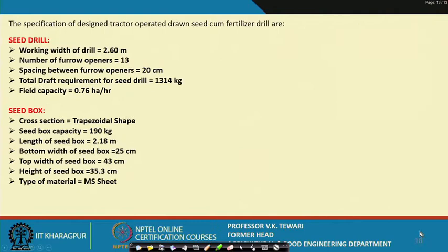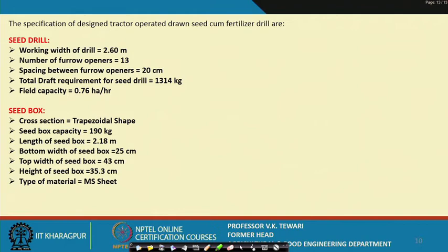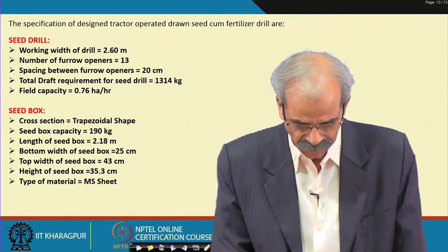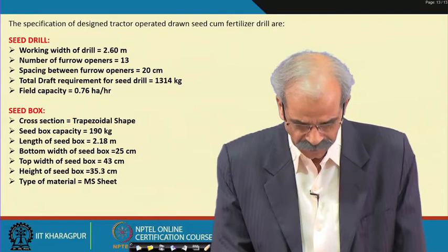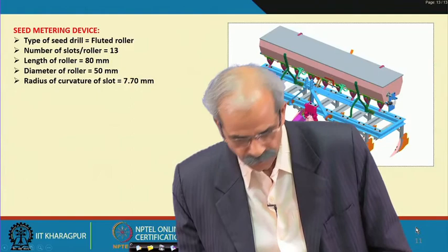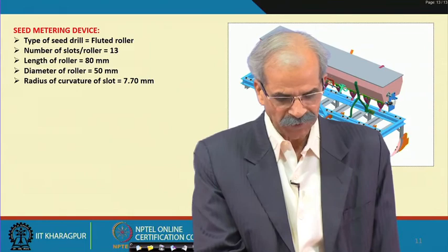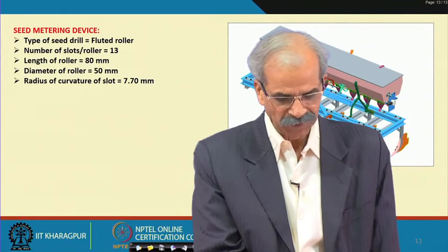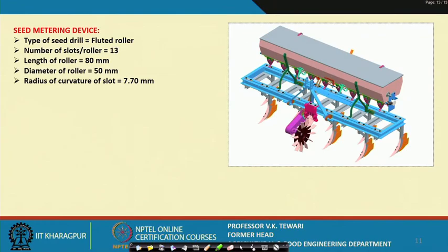The complete specifications of the designed tractor-drawn seed-cum-fertilizer drill are: working width, number of furrow openers, spacing between furrow openers, total draft requirement, field capacity of 0.76 hectares per hour, and seed box details. The seed box material of construction is MS (mild steel) with appropriate thickness. The seed metering device is a fluted roller, with the length of the slot, length of the roller, diameter, and radius of curvature all determined through the design process. Thank you very much.